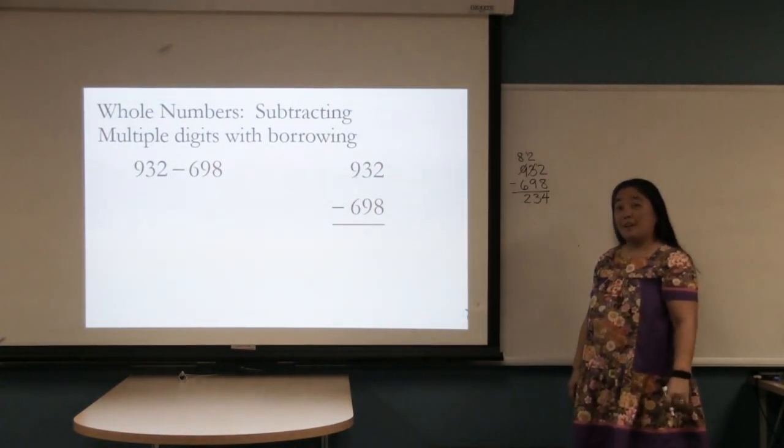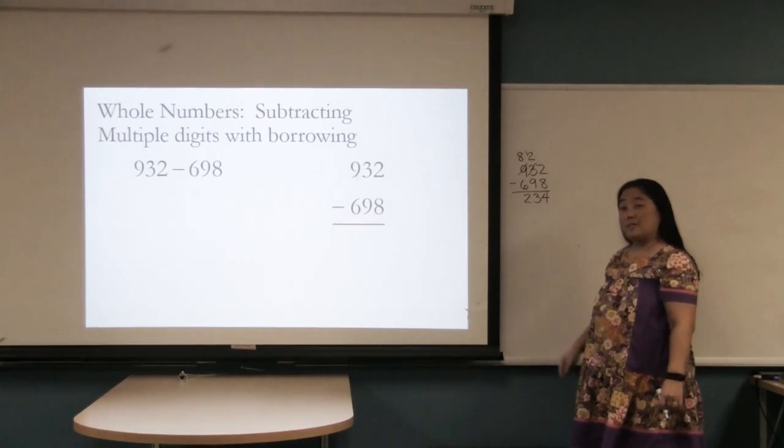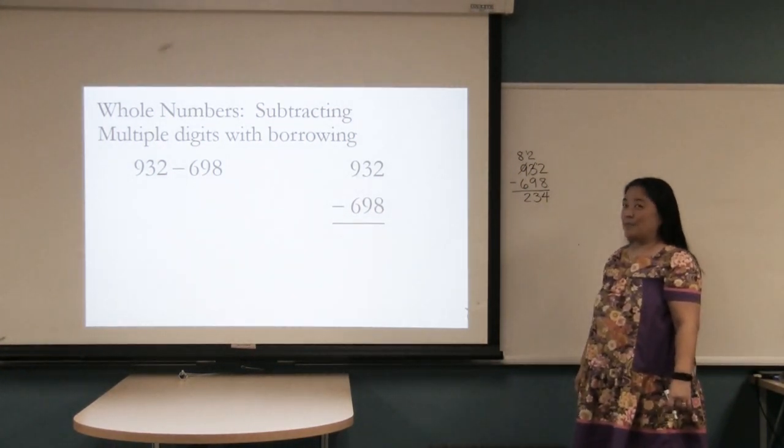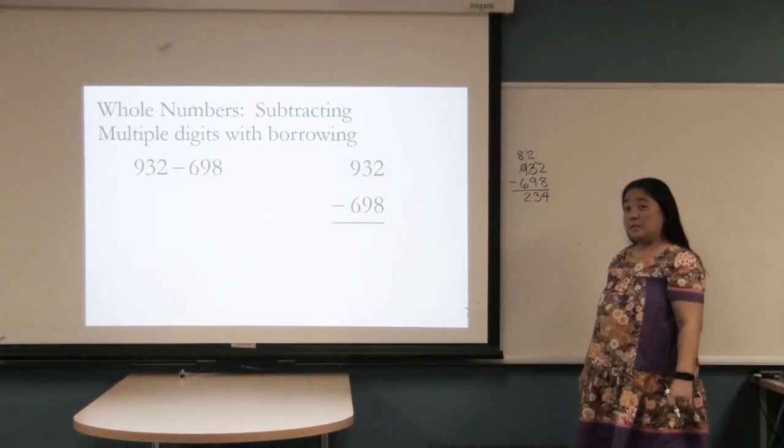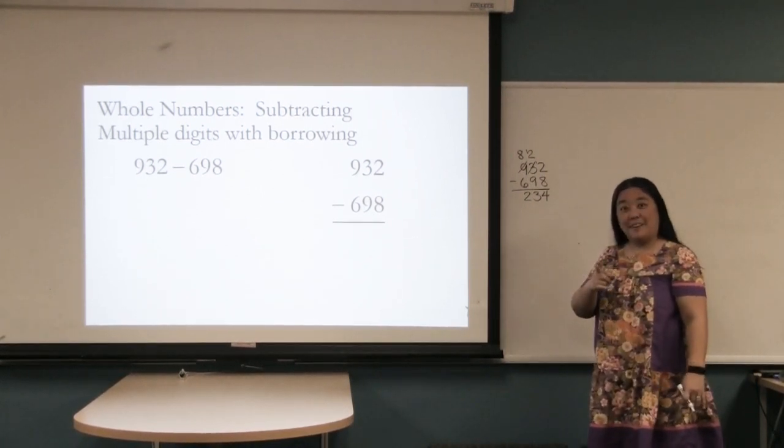When you're subtracting, you do have to have the larger number on top, so nine hundred thirty-two is bigger than six hundred ninety-eight, so we do have to write it that way. When you get to the point where they're written in the opposite direction, you'll have to do something else.